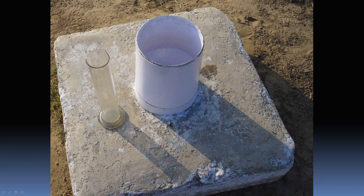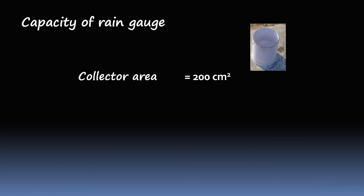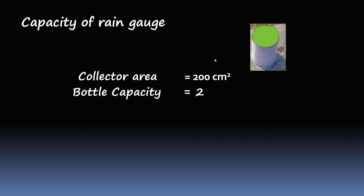Now let's calculate the capacity of the rain gauge — that is, how much rain it can store. The collector area is 200 centimetres square, as you can see here. Bottle capacity options are 2 litre, 4 litre, or 10 litre.